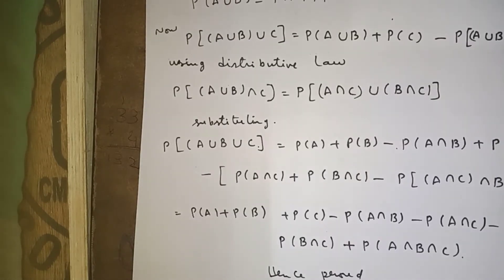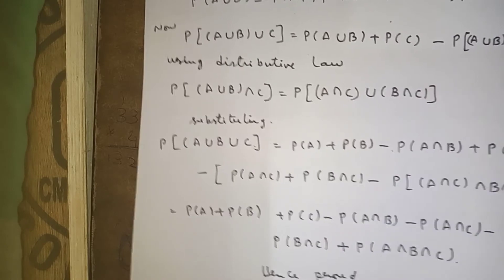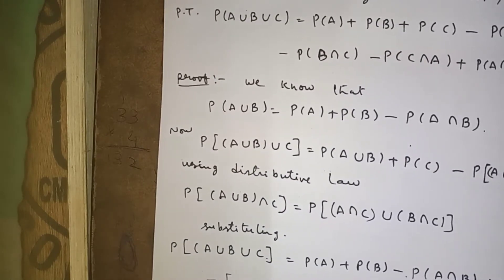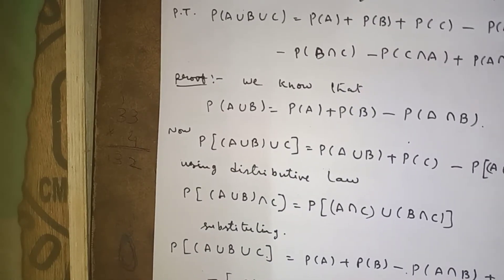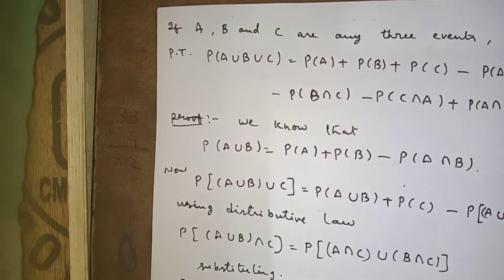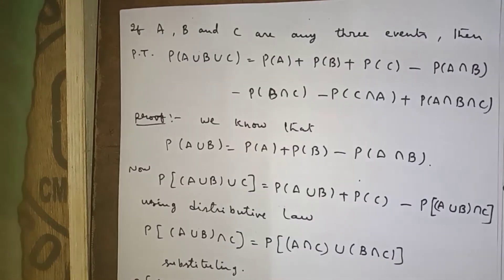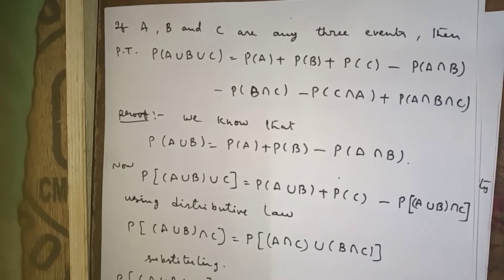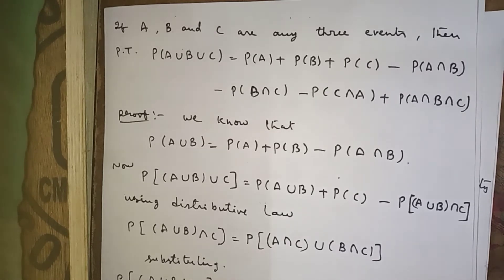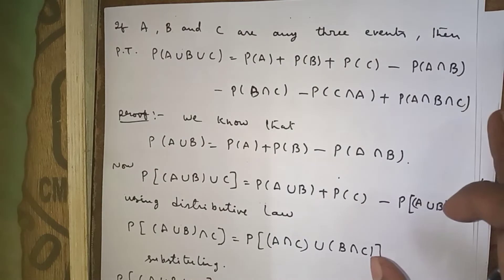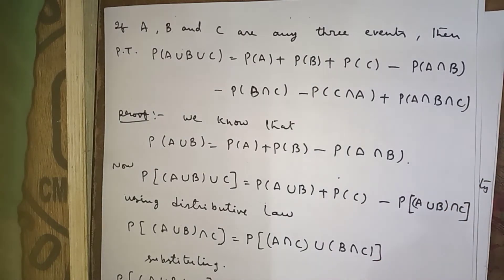Now for three events — if A, B, and C are any three events, then we have to prove that P(A ∪ B ∪ C) = P(A) + P(B) + P(C) − P(A ∩ B) − P(B ∩ C) − P(A ∩ C) + P(A ∩ B ∩ C).